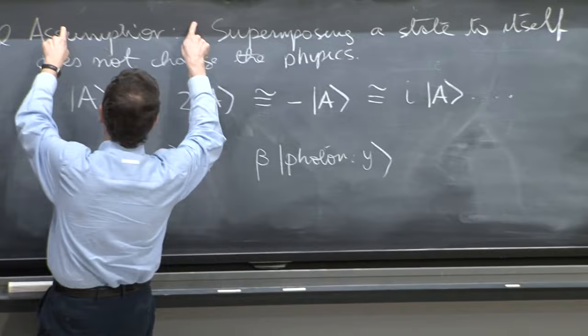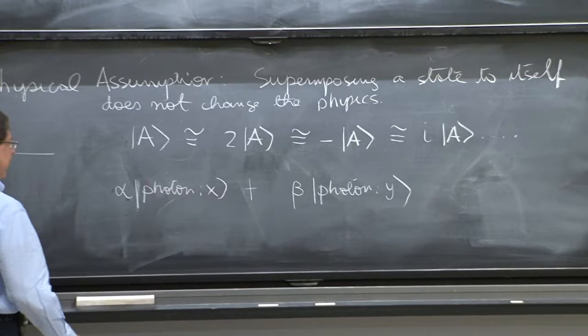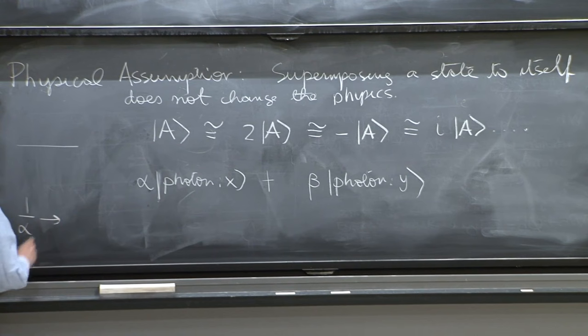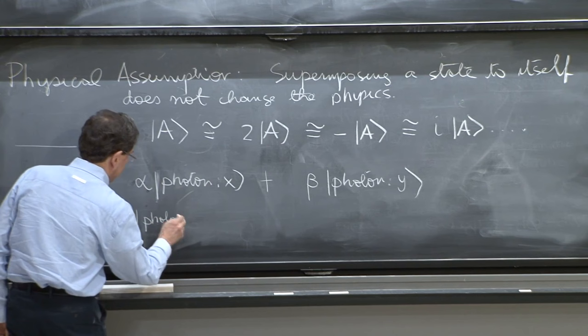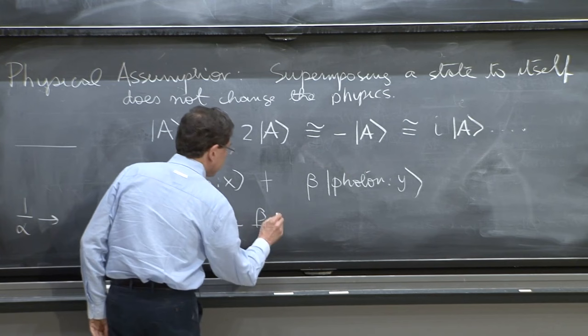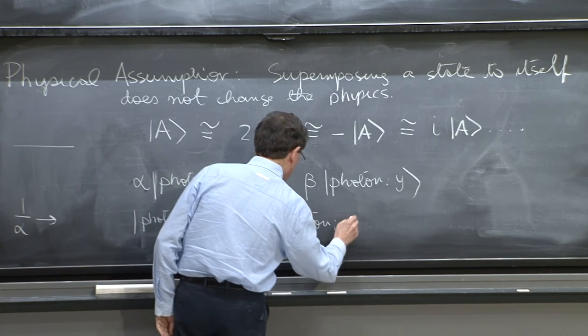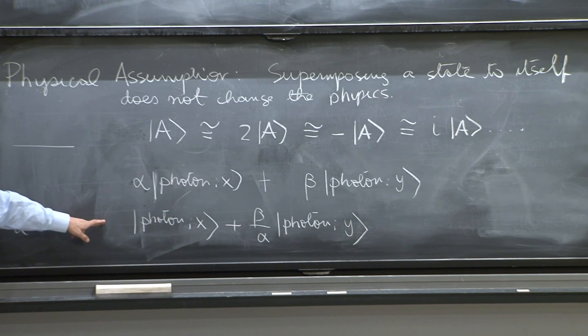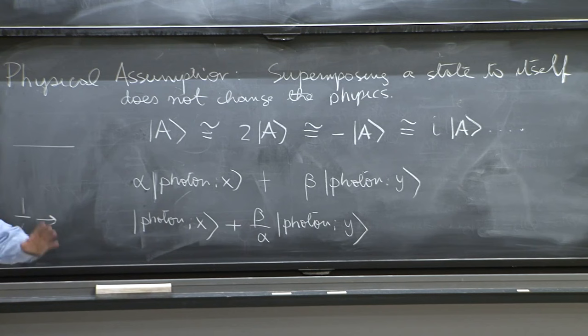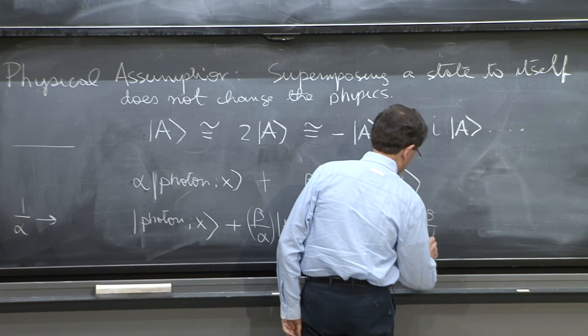But here comes the help. If the overall coefficient doesn't matter, if I can change it, I can multiply everything by 1 over alpha and therefore get that the state is just the same, physically equivalent to photon |x⟩ plus beta over alpha photon |y⟩. So all the physics is contained in this state as well.